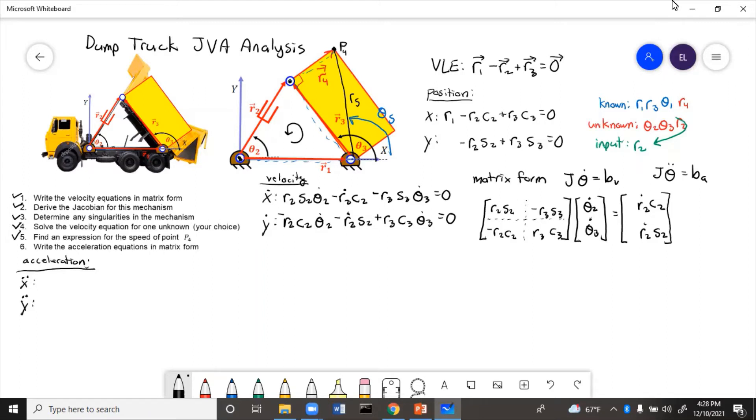Then this third one, the negative r3 s3 theta 3 dot, r3 is a constant, so that won't change. But sine of theta 3 will change, and theta 3 dot will change. So that's two things that change, so we'll get two terms off that. So three terms plus two terms plus two terms is going to be a total of seven terms. However, we'll see that some of those will combine and we'll end up with only six terms. So let's get started.